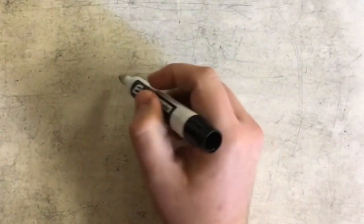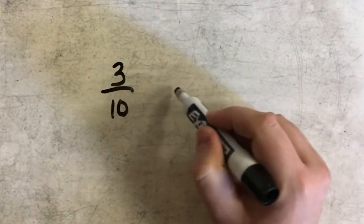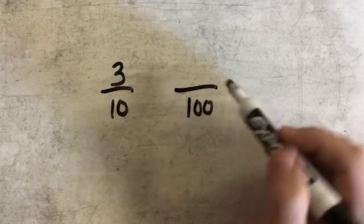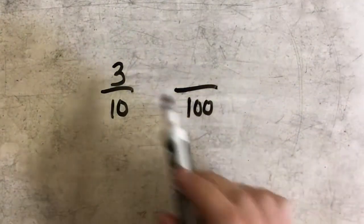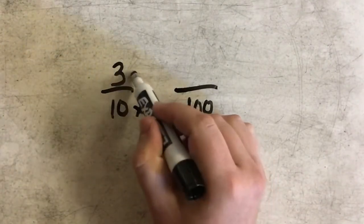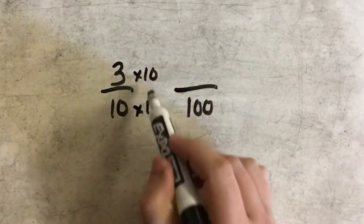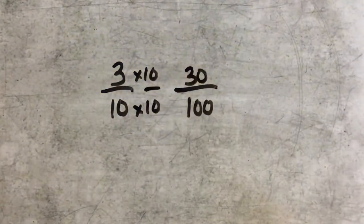One more example here. Three-tenths. Again, if I wanted to write that as an equivalent fraction with a denominator of one hundred, I would want to multiply three by ten, since I also multiplied ten by ten. And three times ten would give me thirty-hundredths.